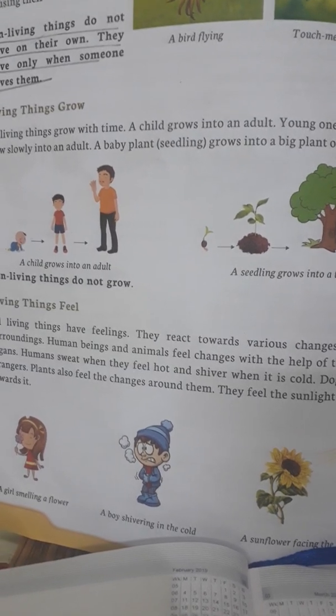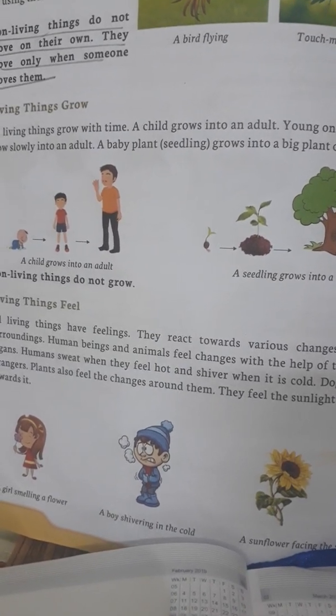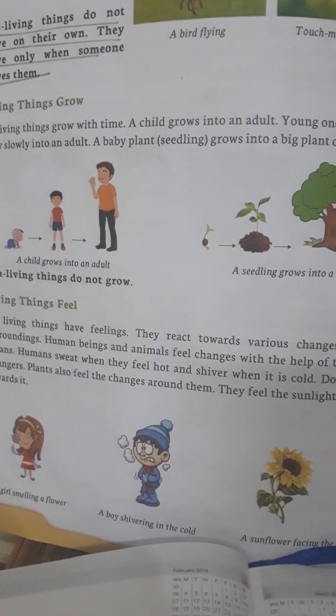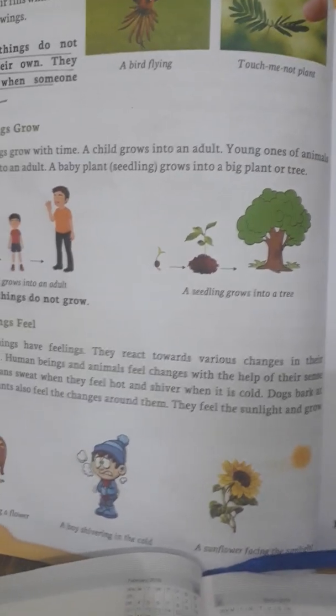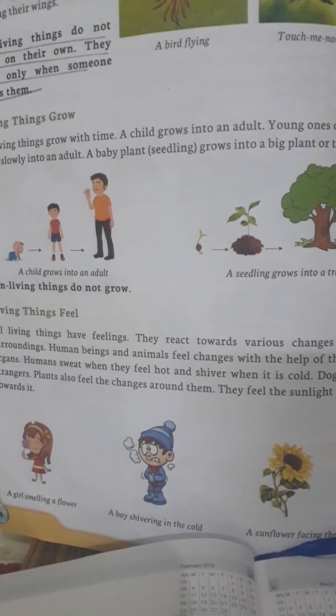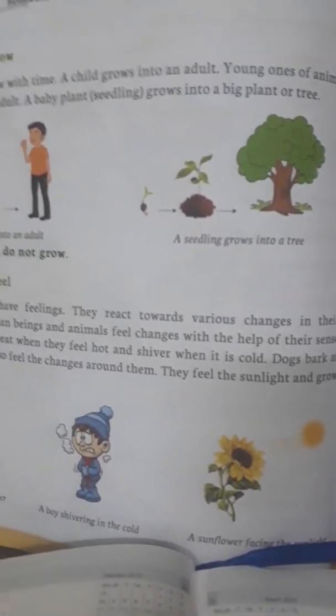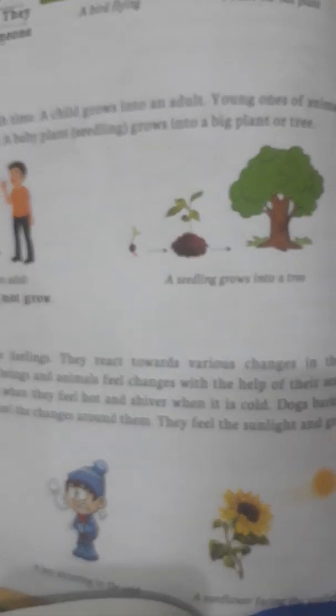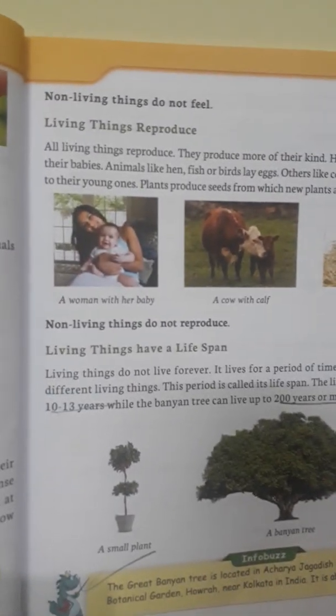For example, if you touch a hot object, you will immediately feel the heat and let it go. Plants also feel the changes around them. Even dogs bark at strangers. Plants feel the sunlight and grow towards it — a sunflower plant tries to face towards the Sun.